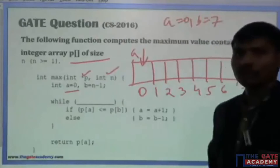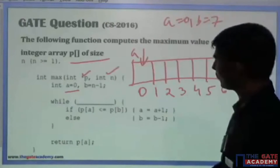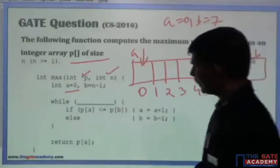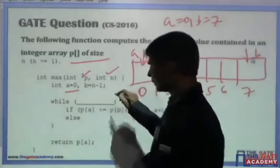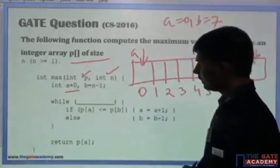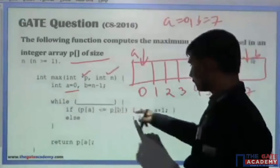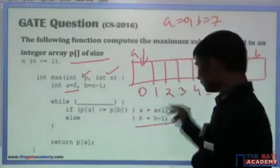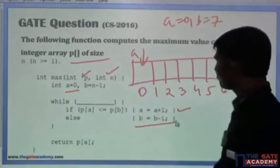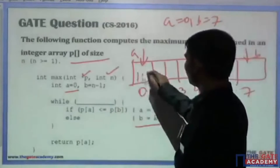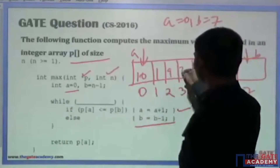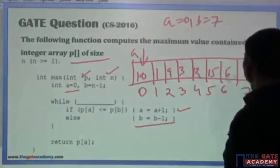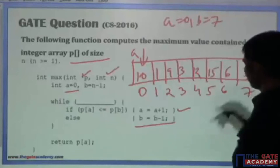You want to compute the maximum value contained in the array. The function is executing, and what we are doing: if p[a] is less than or equal to p[b], then a is equal to a plus 1, otherwise b is equal to b minus 1. Suppose the array has values like 10, 1, 9, 3, 12, 15, 6, and 7.